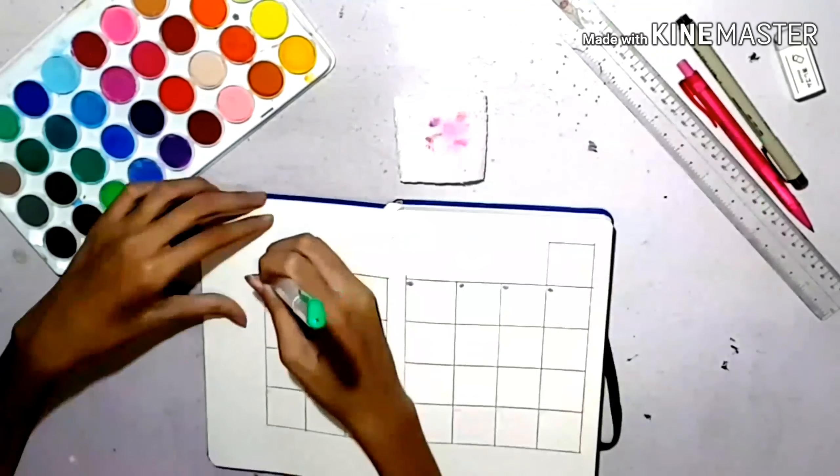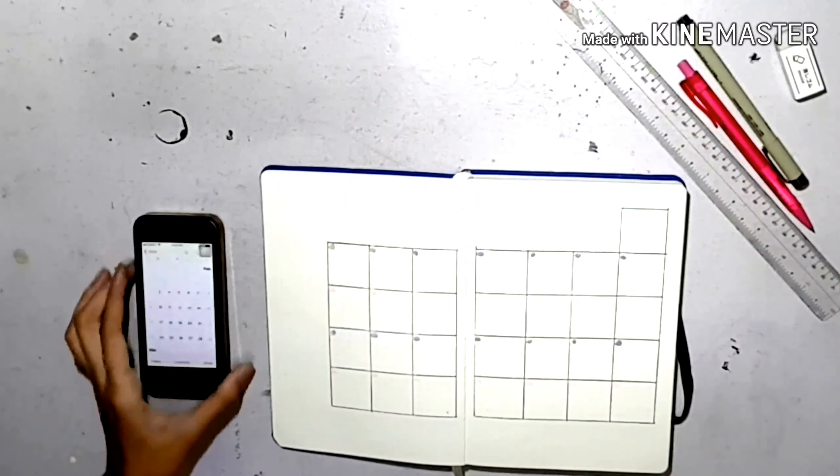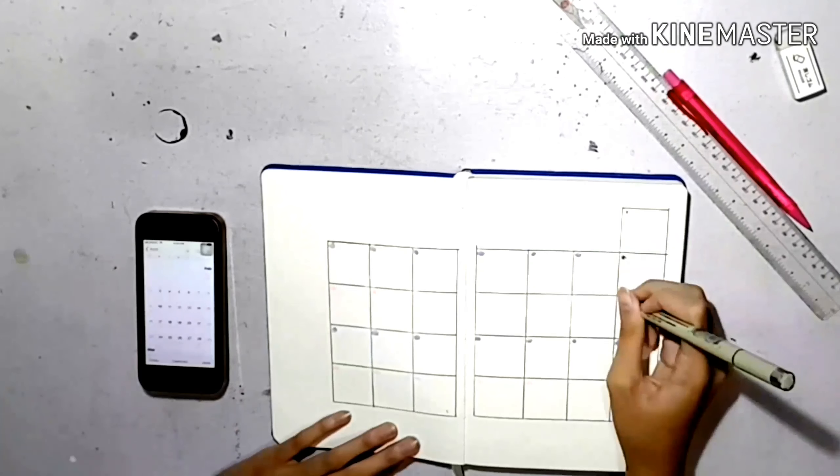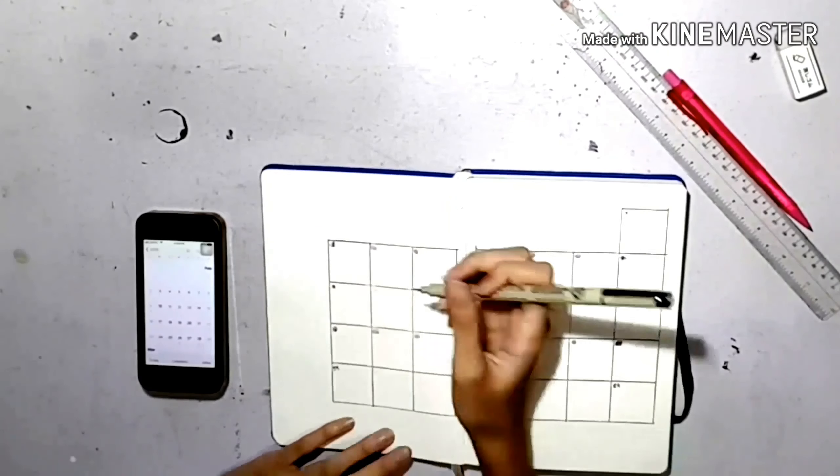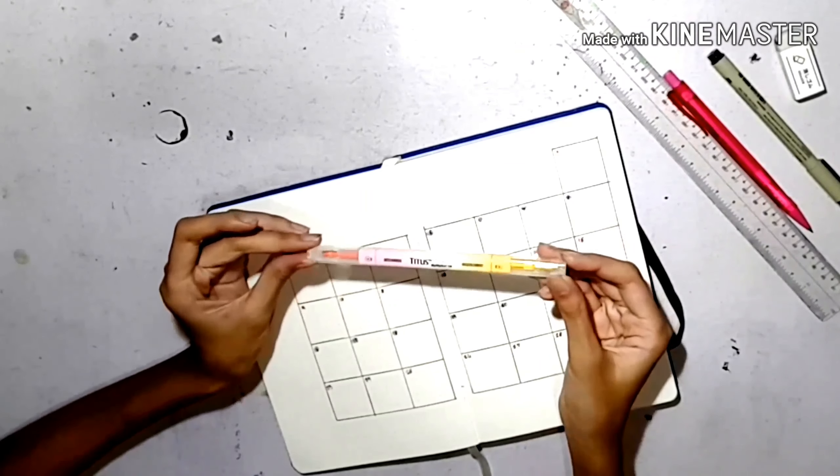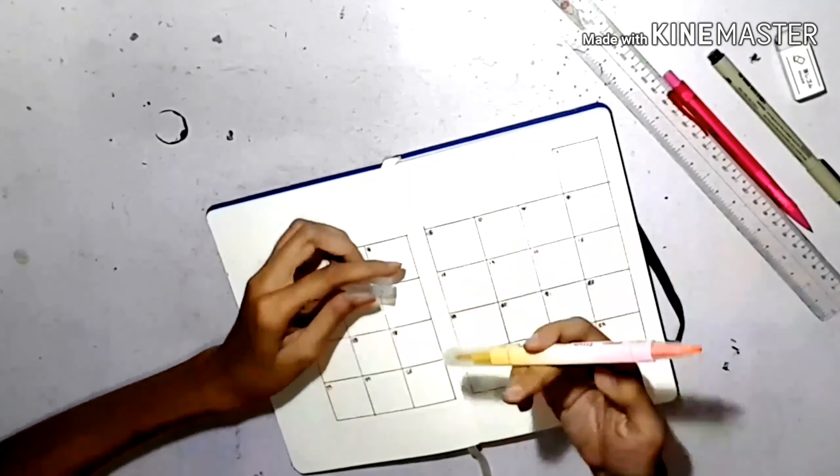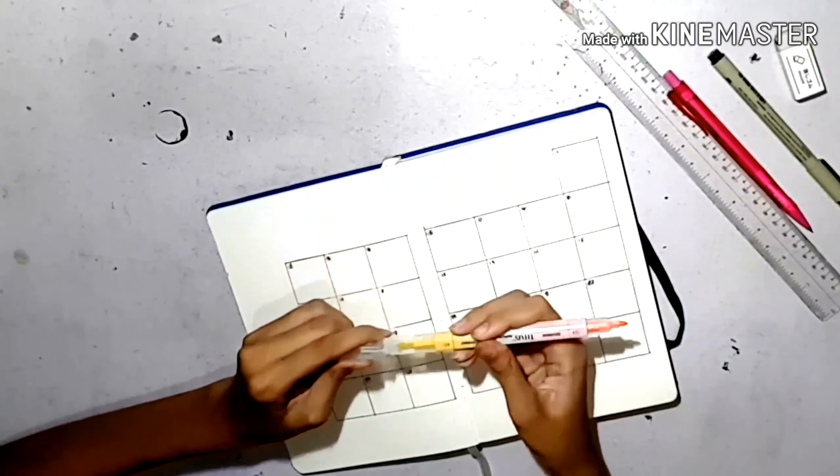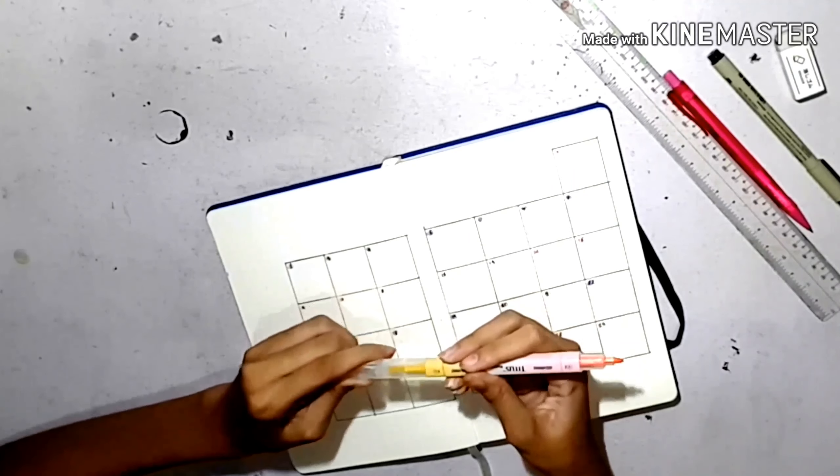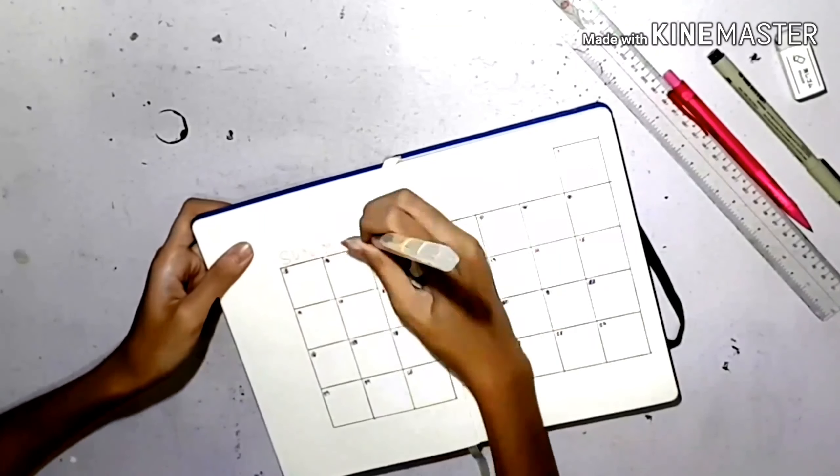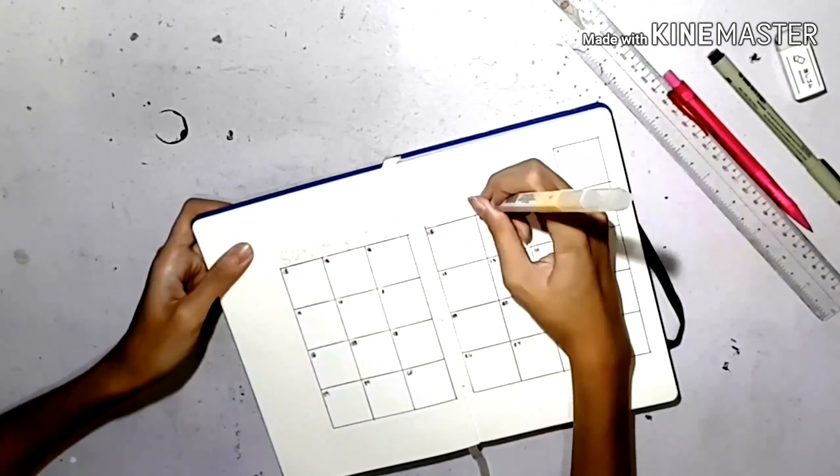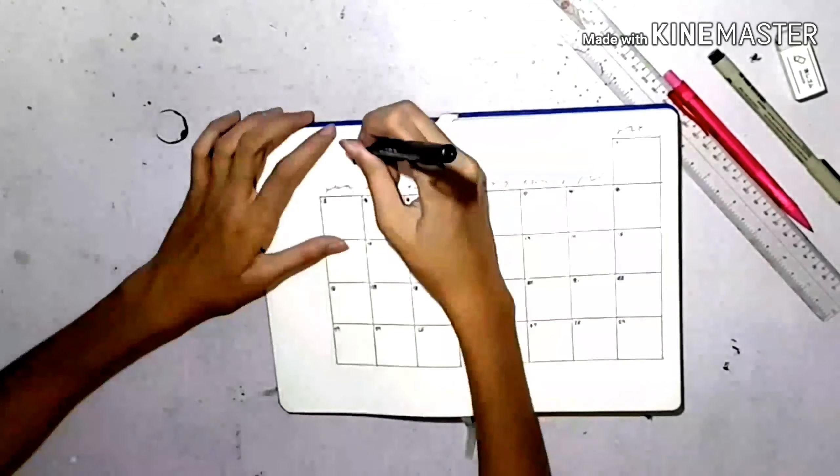I'm using my calendar on my phone as a reference for the numbers for each box. I am using the Zebra Mildliners and writing the days of the week on top of each column in cursive.